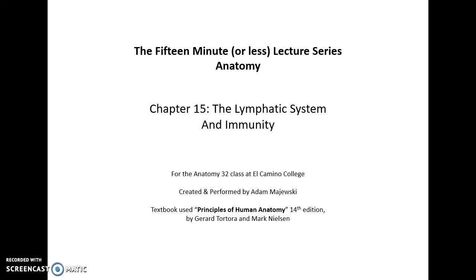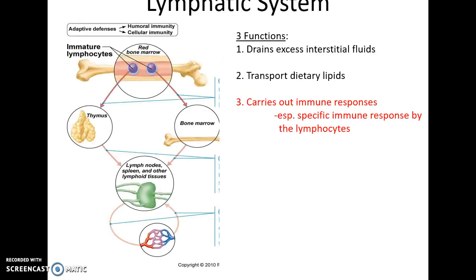15 minute or less lecture series, anatomy chapter 15: the lymphatic system and immunity. The lymphatic system has three main functions. One is to drain excess interstitial fluids surrounding the tissues. Two is to transport dietary lipids from the small intestines to the bloodstream. And three is to carry out specific immune responses against pathogens via the lymphocytes.